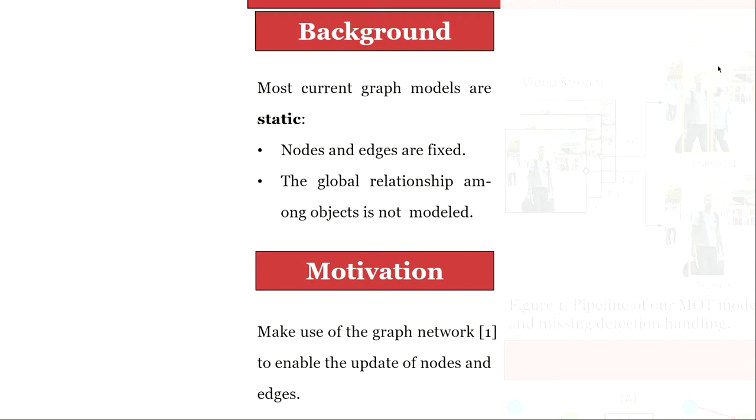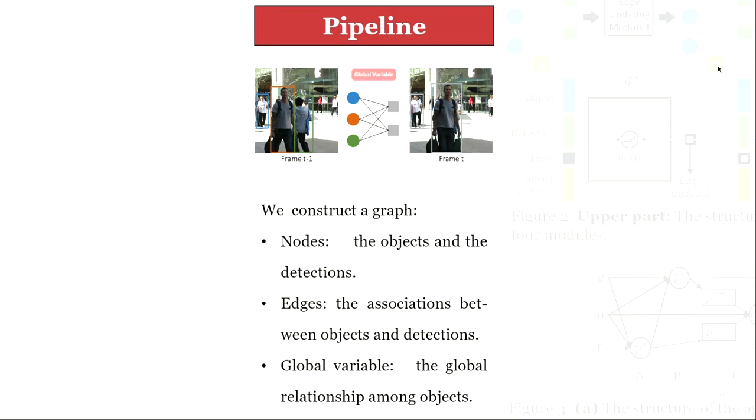We propose a new neural online multiple object tracking method with an M2N graph network. The graph network contains three components: the nodes, the edges, and the global variable.